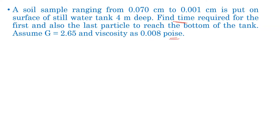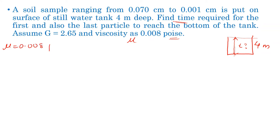Here the viscosity given is dynamic viscosity, and the unit is poise. We identify this as dynamic viscosity. The tank is 4 meters deep with two particle sizes: 0.07 cm and 0.001 cm. The total height, specific gravity, and viscosity are noted. Mu is equal to 0.008 poise.